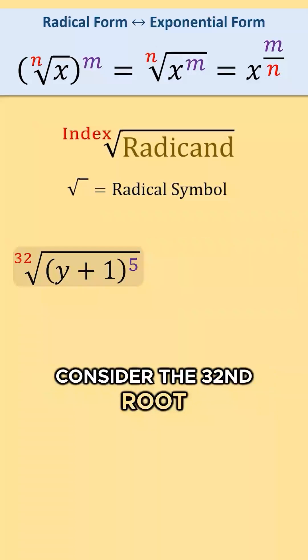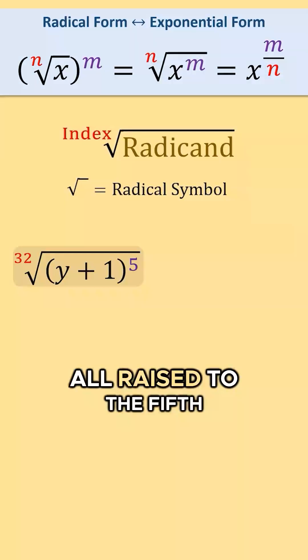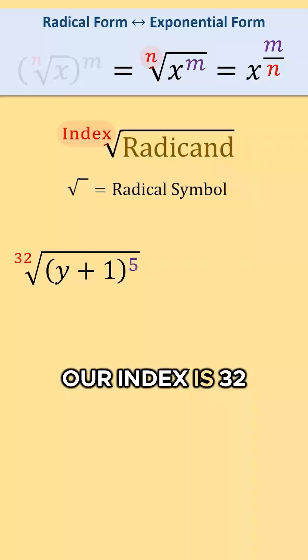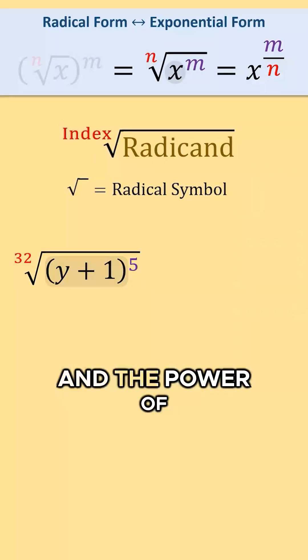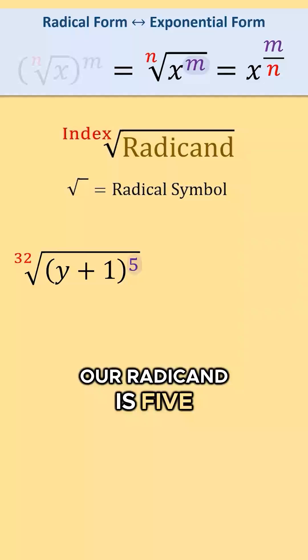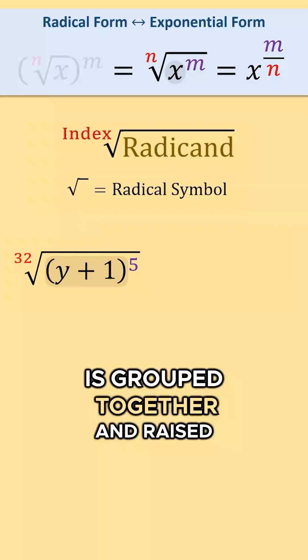Consider the 32nd root of the quantity y plus 1 all raised to the fifth power. Here our index is 32, the base of our radicand is y plus 1, and the power of our radicand is 5. Since y plus 1 is grouped together and raised to a power within our radical symbol,